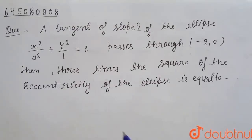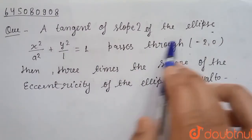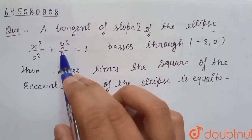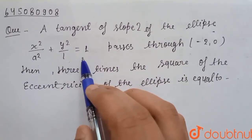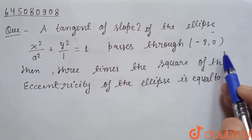The question is, a tangent of slope 2 of the ellipse x² / a² + y² / 1 = 1 passes through (-2, 0).